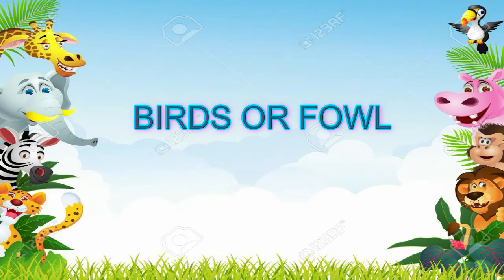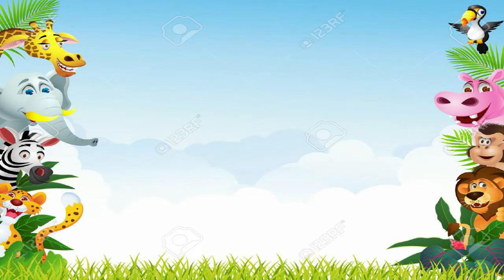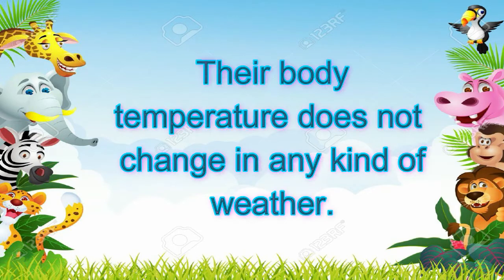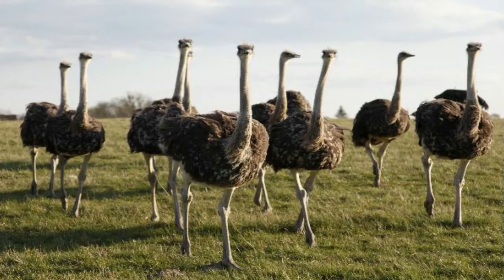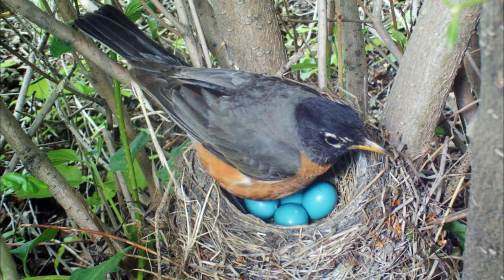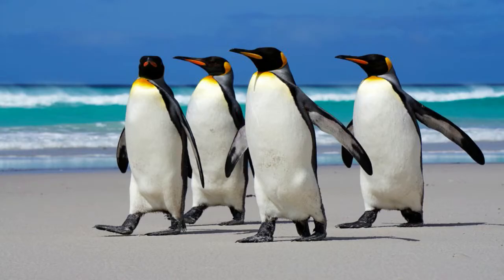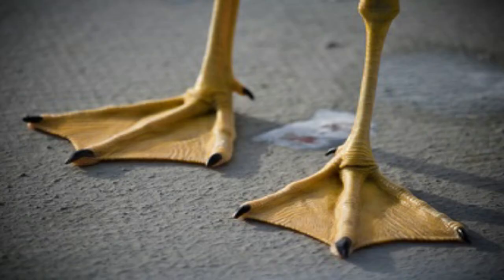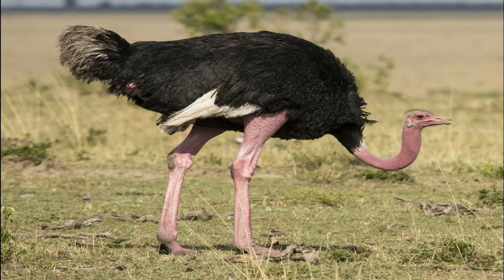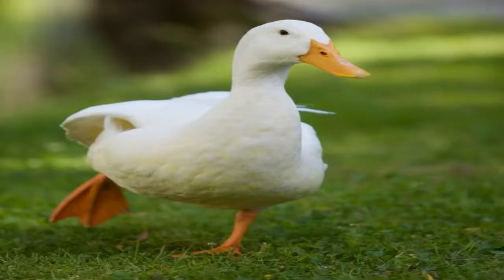Birds are warm-blooded animals. They also have two legs for walking. Some common birds are chicken, ostrich, duck, and pigeon.